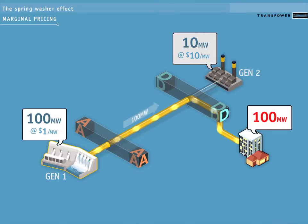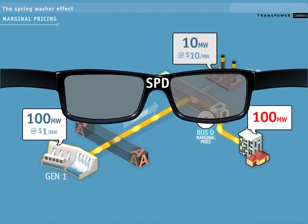We can see that the 100 megawatts can all be supplied by Generator 1. SPD is then used to calculate the marginal price at bus D. Let's view the scenario through SPD's eyes.